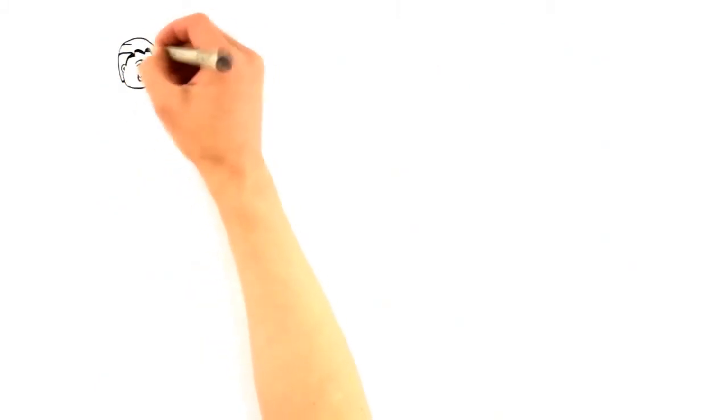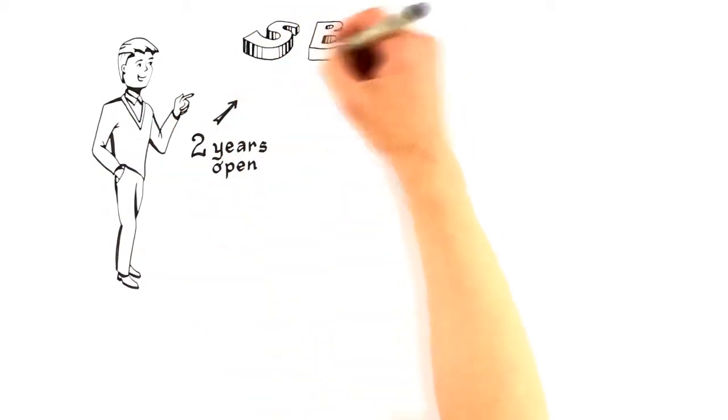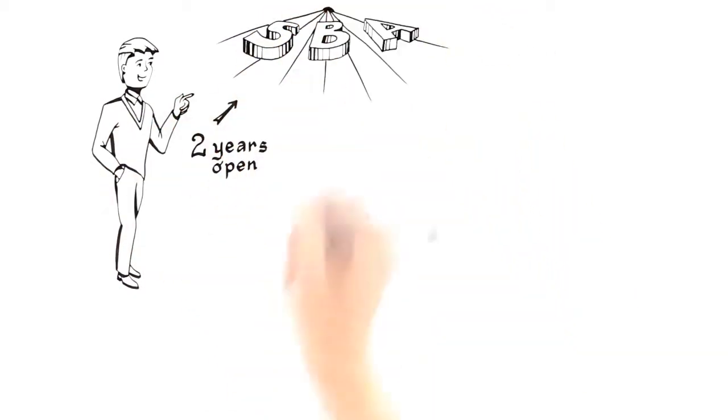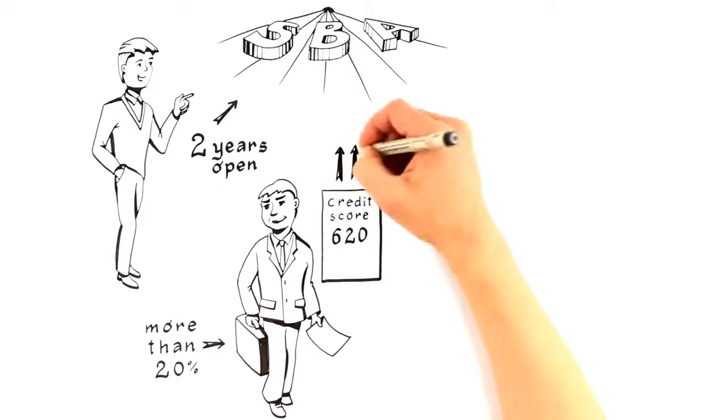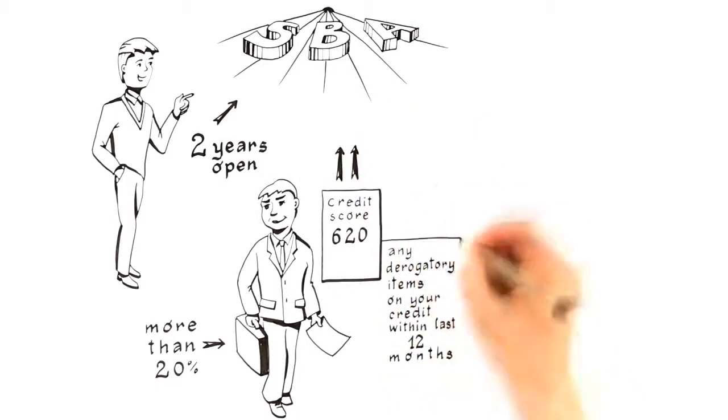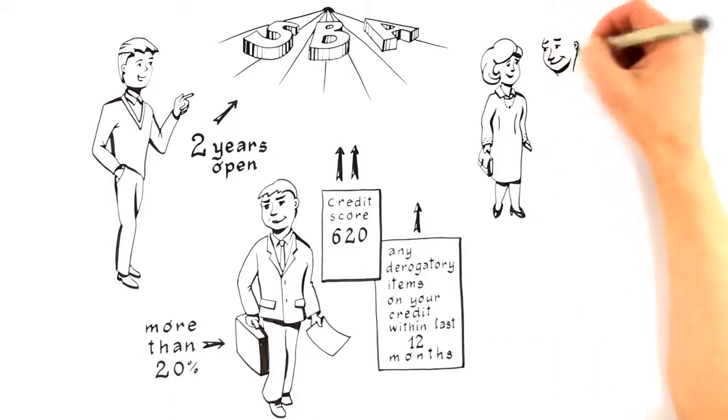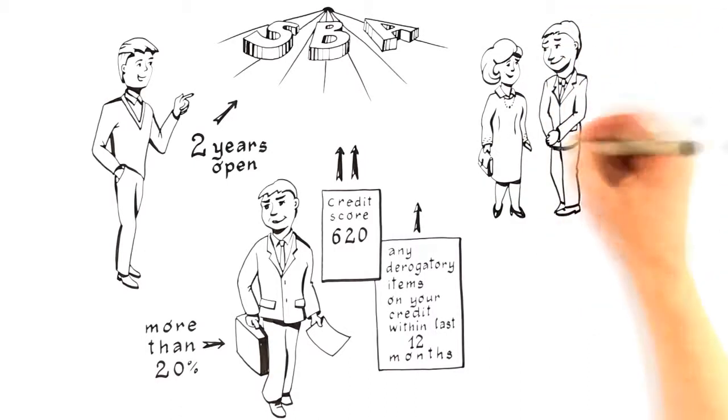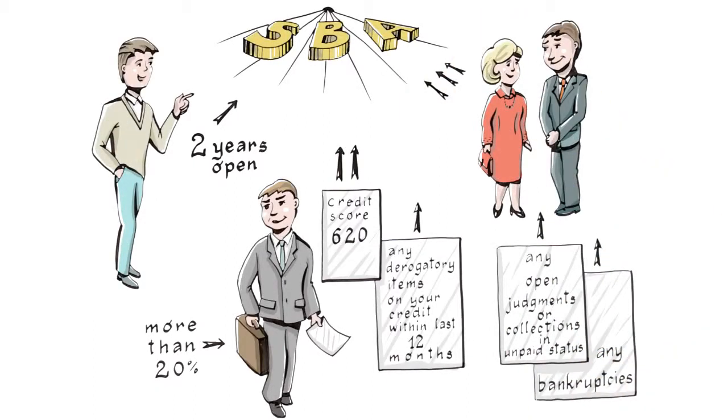Your business should be open at least 2 years to secure an SBA loan. To qualify, all business owners who own more than 20% of the business should have personal credit scores of 620 or higher. Most important, there shouldn't be any derogatory items on your credit within the last 12 months. You and your partner's credit should also not have any open judgments or collections in unpaid status. Also, you shouldn't have any bankruptcies on your credit report to be approved.